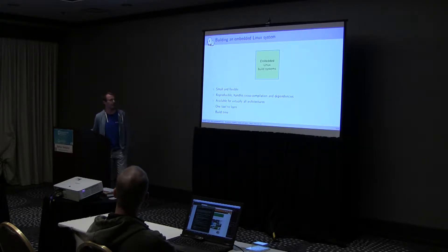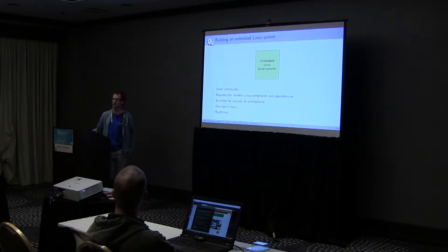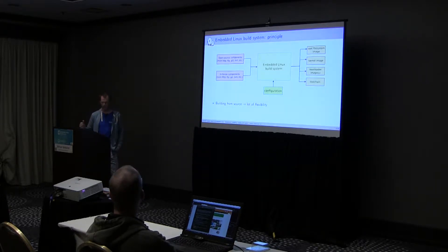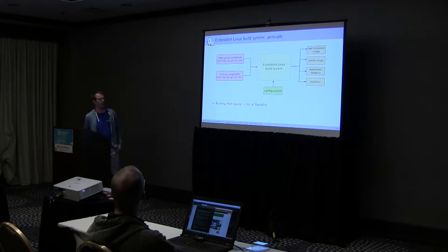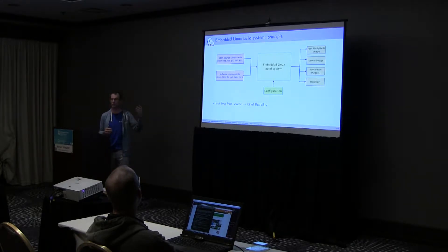BuildRoot is known to be one of the simpler solutions available. It's an embedded Linux build system — just a bunch of scripts and makefiles that, as input, take the source code for open source or in-house proprietary components coming from HTTP, FTP, Git, Subversion, or whatever version control system you like. It takes the configuration on the other side saying, I want to build a system for ARM with kernel version 4.14, with BusyBox, with Qt, and so on.